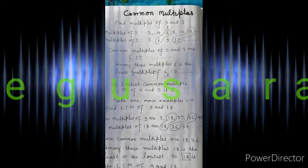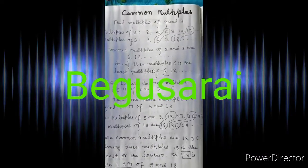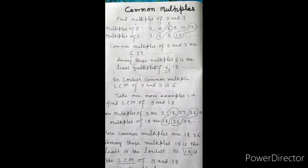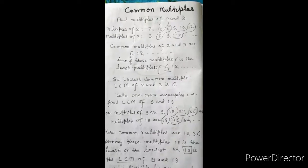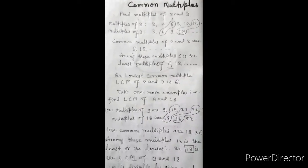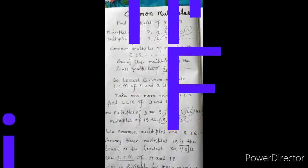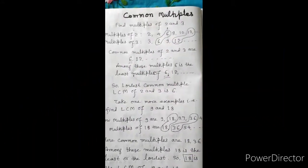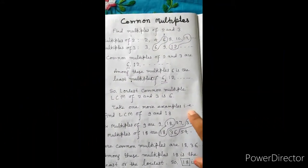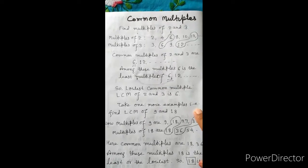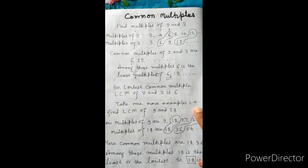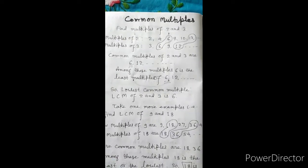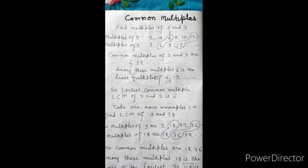I am going to explain multiples and factors for students of standard 5th. Try to understand about multiples of a number. The numbers which can be obtained by multiplying the given number with natural numbers are called multiples of the given number.